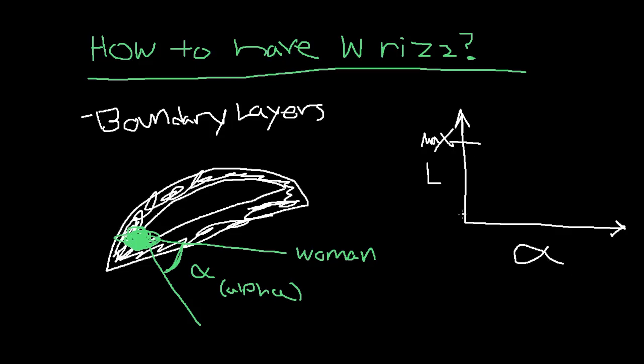This is your lift. In this case it will be the L's potential—the L's that you could take if you have too much alphaness. Notice how at some point there's a stall, and you don't want to stall while you're trying to riz up the person you're trying to riz up.